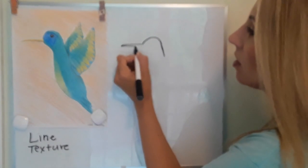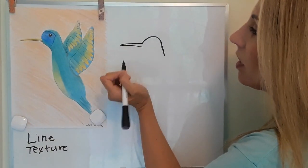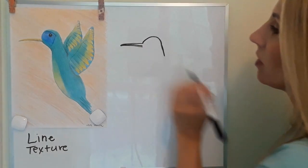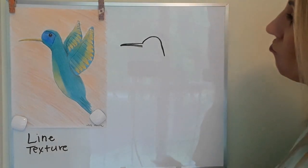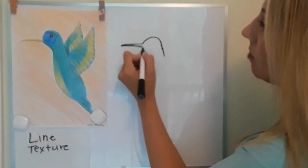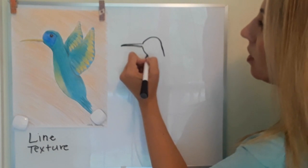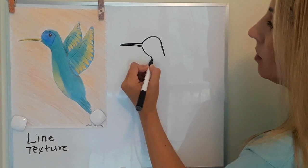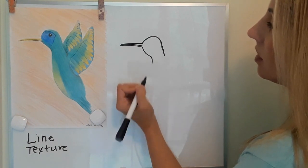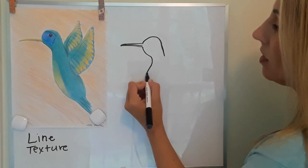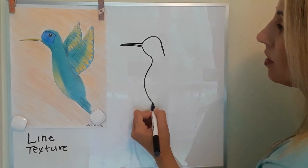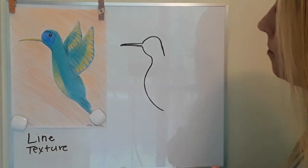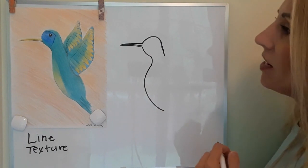Then we're going to bring it back and put a little line here, and we're going to do a curve line underneath — like a backwards C — and then do another long curve this way.